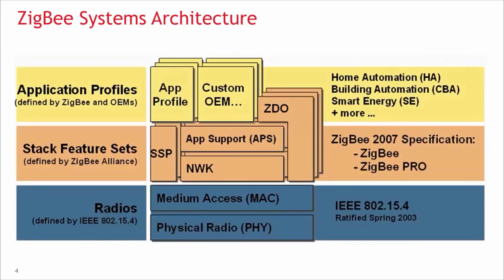Now let's examine the ZigBee system architecture to see who is responsible for which pieces in the system. At the lowest layer, we have the MAC — the medium access control — and PHY, the physical layer, which relates to the radio and how it's accessing the airwaves. This behavior is governed by an IEEE standard, 802.15.4, circa 2003, ensuring favorable coexistence with other 802 standards and FCC-compliant operation across unlicensed ISM bands within the frequency spectrum. On top of radio functionality, we have a collection of layers known as the stack feature set — basically the network layer behavior defined by the ZigBee Alliance, detailed in the 2007 specification.